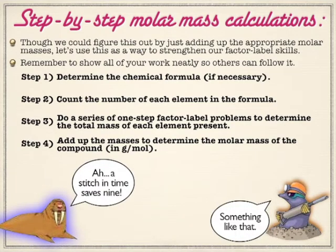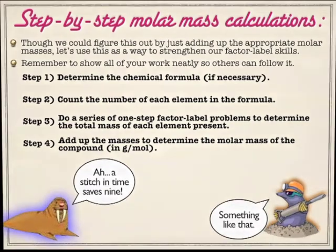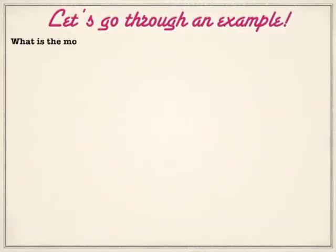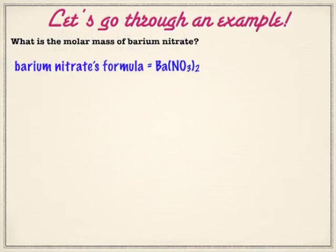So what we'll do is go through one example of molar mass. Feel free, like always, to pause the video before I show the next step and see what you can do. Go ahead and pause the video and write down the formula for barium nitrate. Barium nitrate is going to be Ba(NO₃)₂. Don't forget your parentheses if you have more than one of a polyatomic.